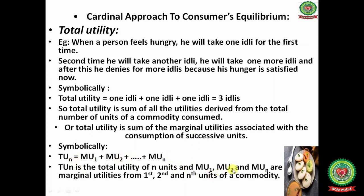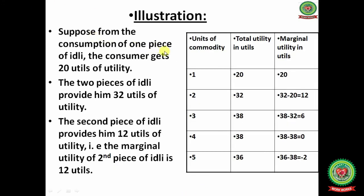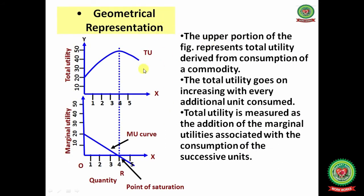Total utility TU(n) is the total utility from the nth commodity, and MU1, MU2 through MU(n) are the marginal utilities from the 1st, 2nd, through nth units. From one piece of idli the consumer gets 20 utils, from the 2nd piece there is 32 total utility and 12 utils of marginal utility.